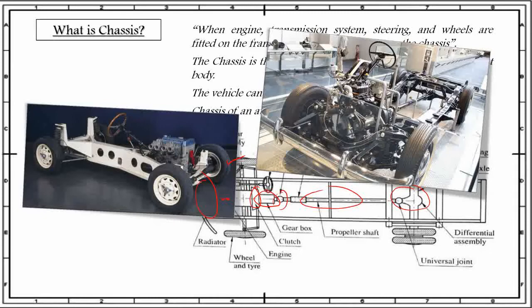Chassis is a French term which was initially used to denote the frame part or main structure of a vehicle. It is now extensively used to denote the complete vehicle except body, for heavy vehicles with separate body, and for light vehicles of mono construction type having body integral with frame.